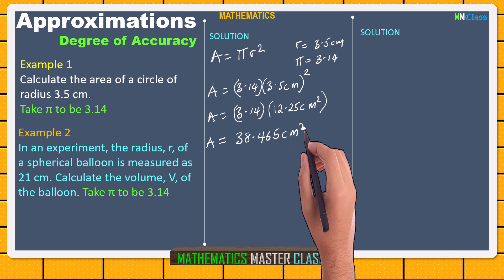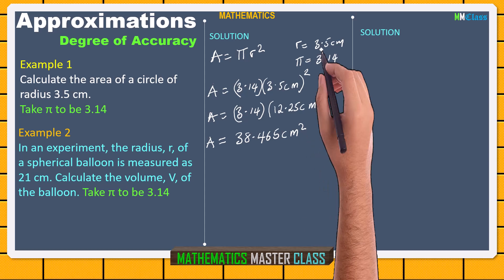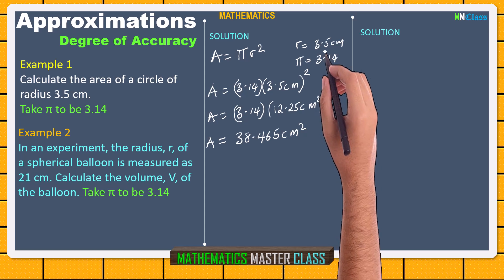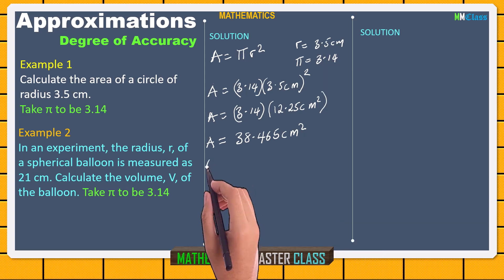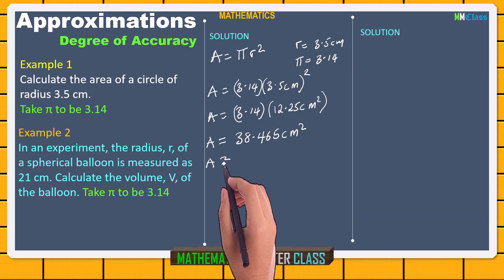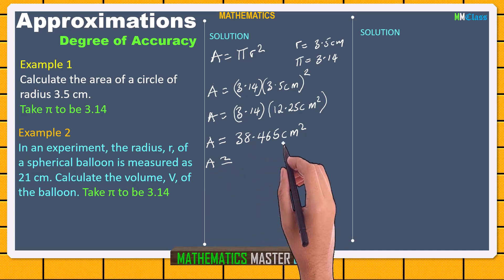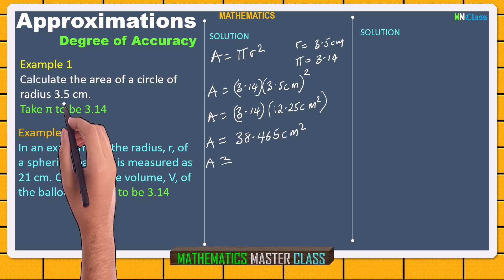Now, the degree of accuracy says that since the parameter from the equation — the radius of the circle — is 3.5, the value is in two significant figures, so our final answer must also be in two significant figures. We must approximate to two significant figures to reflect the parameter given, that is, 3.5 cm as the radius.